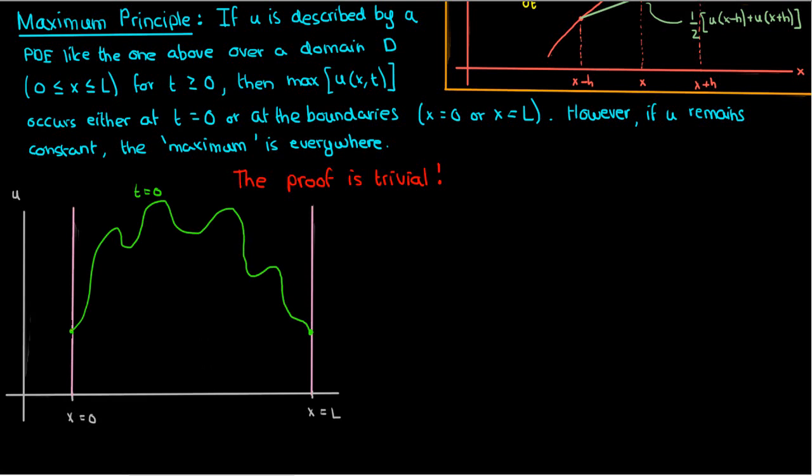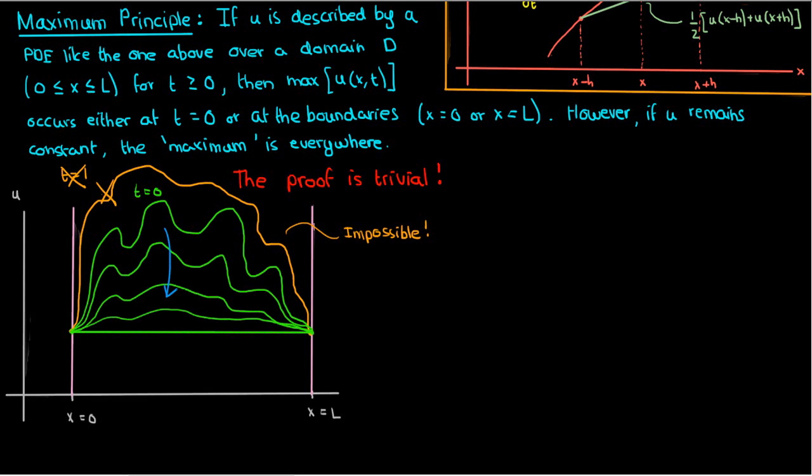then according to the maximum principle there's no way it can go up for times beyond 0 to give a new maximum. Instead, u is going to shift down as time goes on and eventually fizz out or equilibrate to become a flat line as we get to steady state.